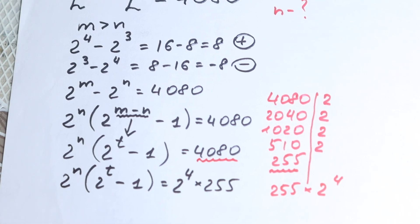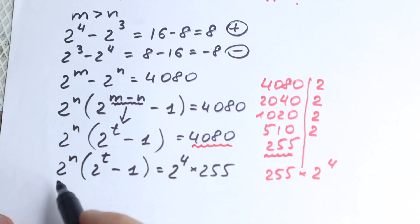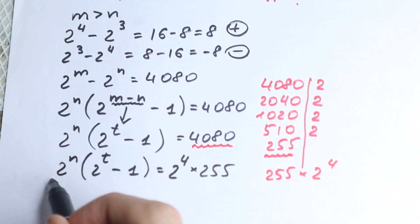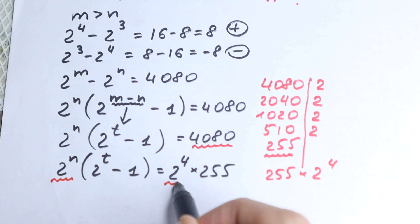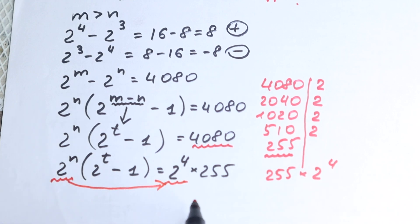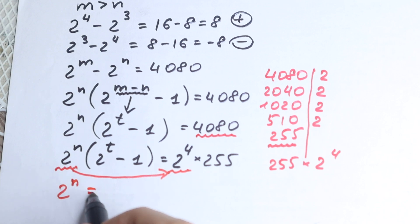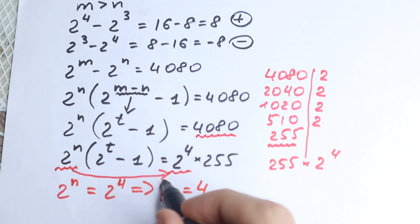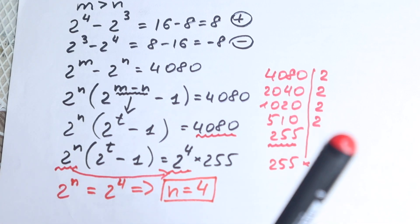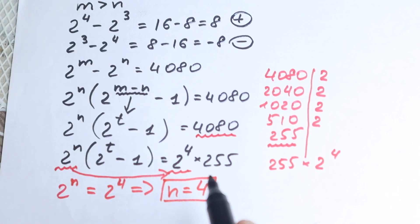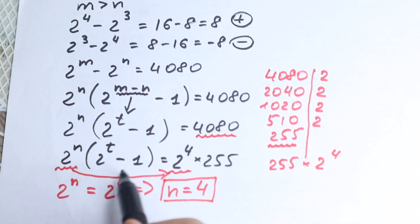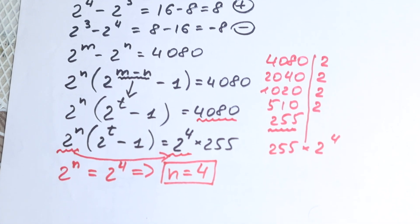Now let's look closely at this expression. We have 2 to the power n on the left and 2 to the fourth power on the right. We can match these expressions: 2 to the power n equals 2 to the power 4, which gives us n equals 4. This is our first really important result. And after cancelling those terms, we still have the remaining expression: 2 to the power t minus 1 equals 255, which we still need to solve.